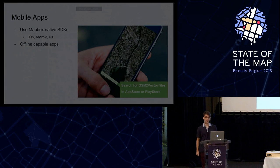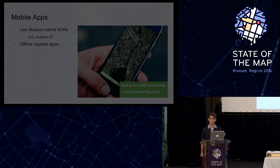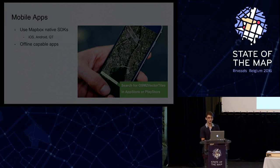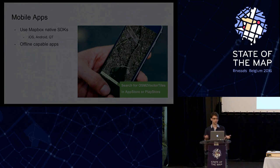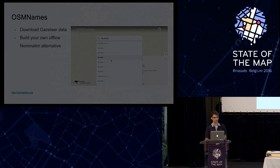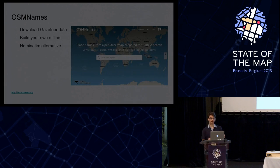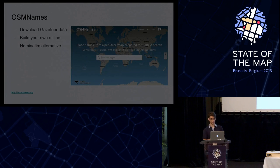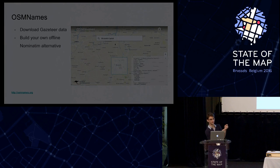Not only can we do web maps, we can also do mobile apps using the Mapbox Native SDK, which is open source. You can create iOS apps, Android apps, or even desktop apps with Qt. Because we can download the vector tiles, we could create an app that has the entire planet offline if you have the storage — or you go to a city, download that city, and have it offline. We have a prototype app called OSM2VectorTiles. If you search it in the App Store and Play Store you can already feel what you could build as a developer.